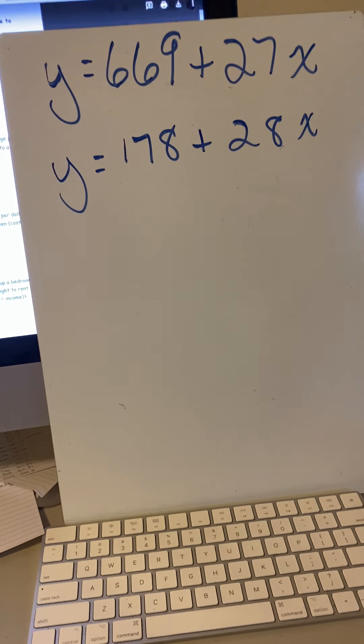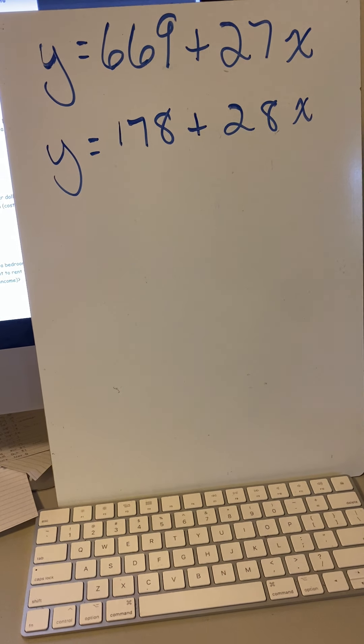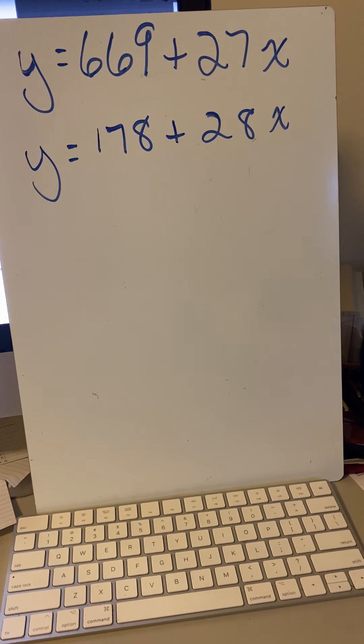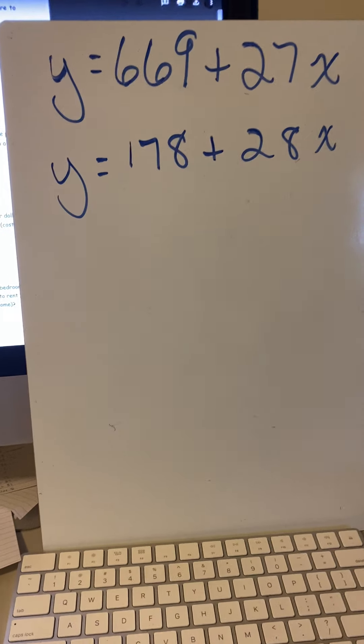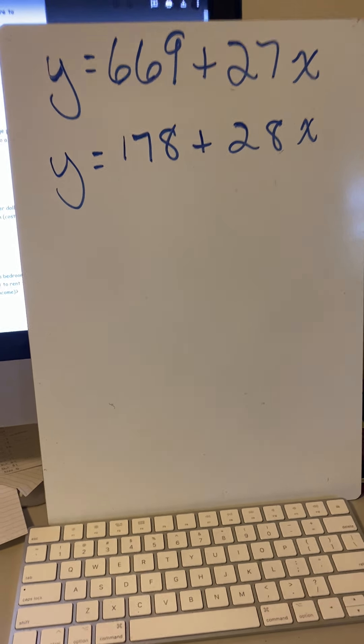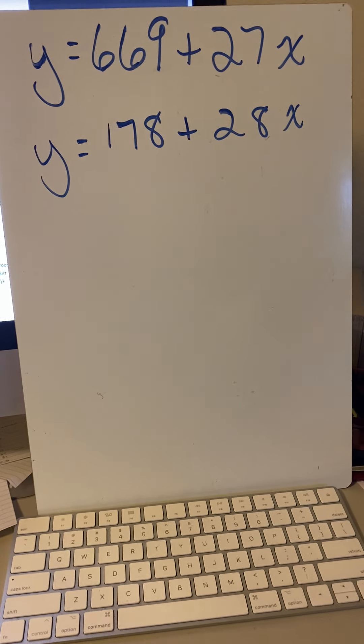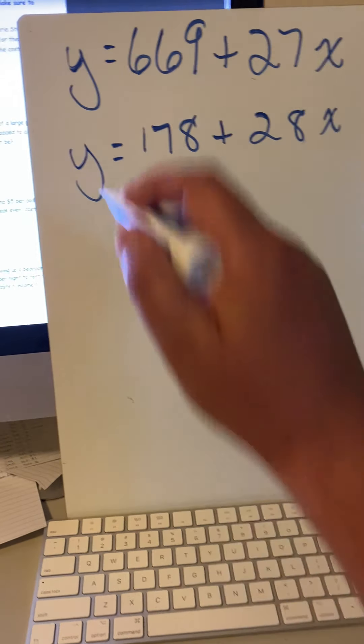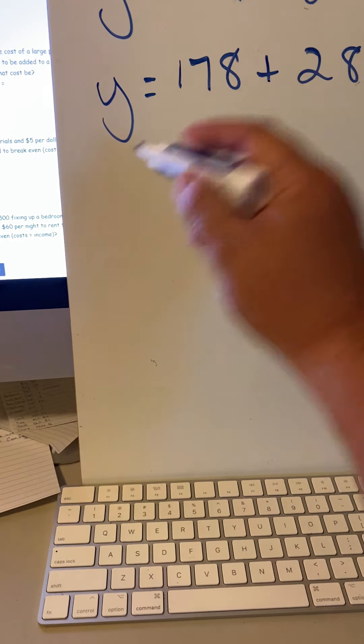The way this is set up right here makes you think it's almost set up into the elimination method. You could use the elimination method, it would work fine. My personal choice would make it a two-step equation. Since Y is equal to Y, this is equal to this.